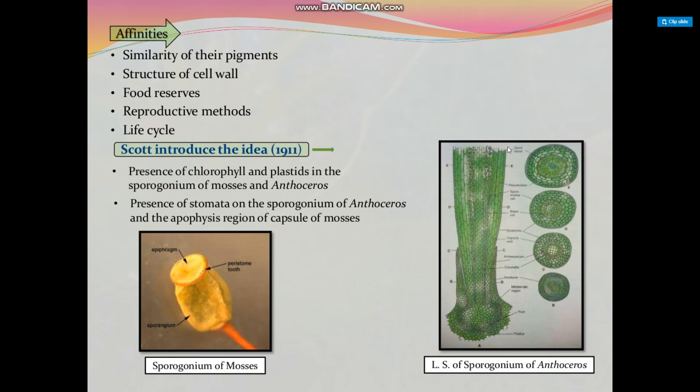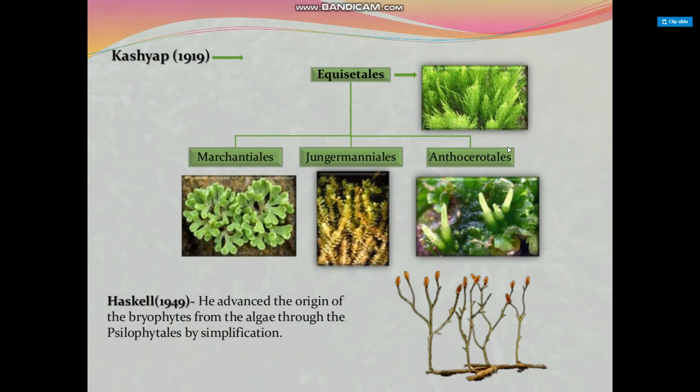This figure shows the sporogonium of mosses with peristome teeth and epiphragm, along with a longitudinal section of the sporogonium of Anthoceros. Equisetum is divided into three orders: Marchantiales, Jungermanniales, and Anthocerotales. Haskell advanced the origin of para-bryophyta from algae through the Sphaerocarpales by simplification.